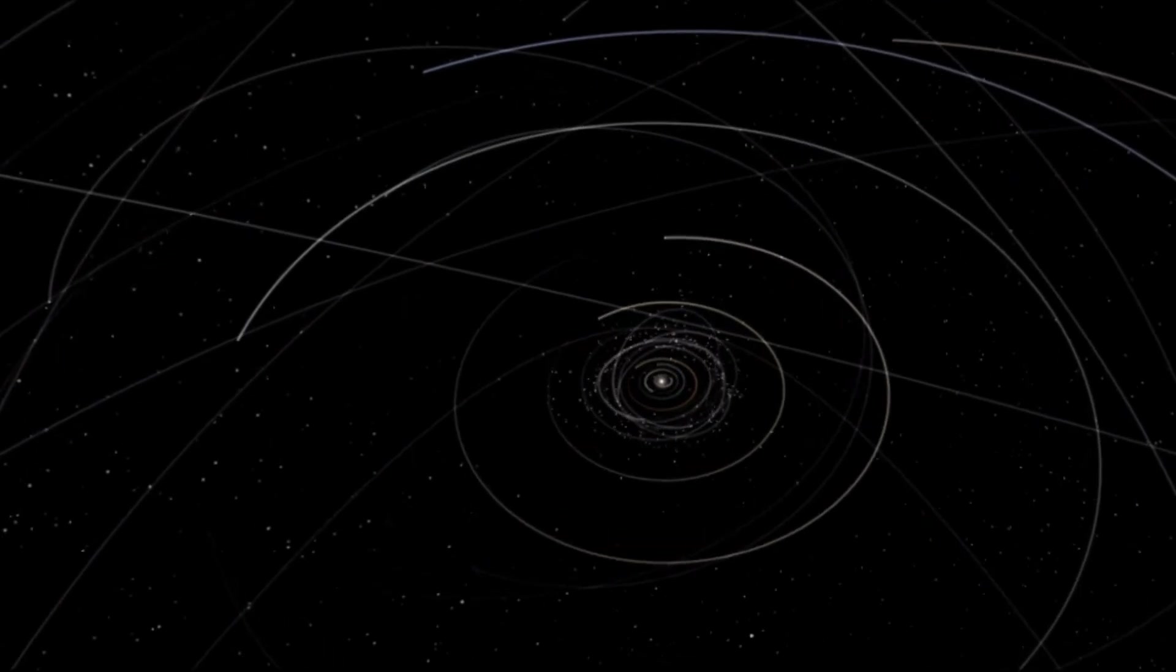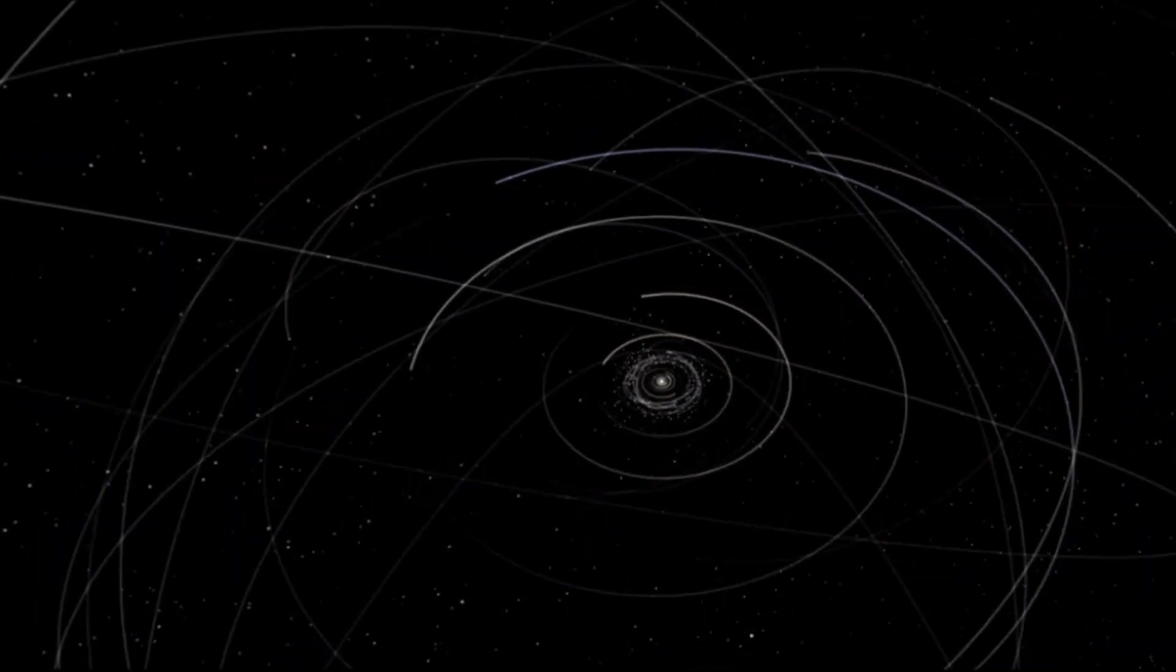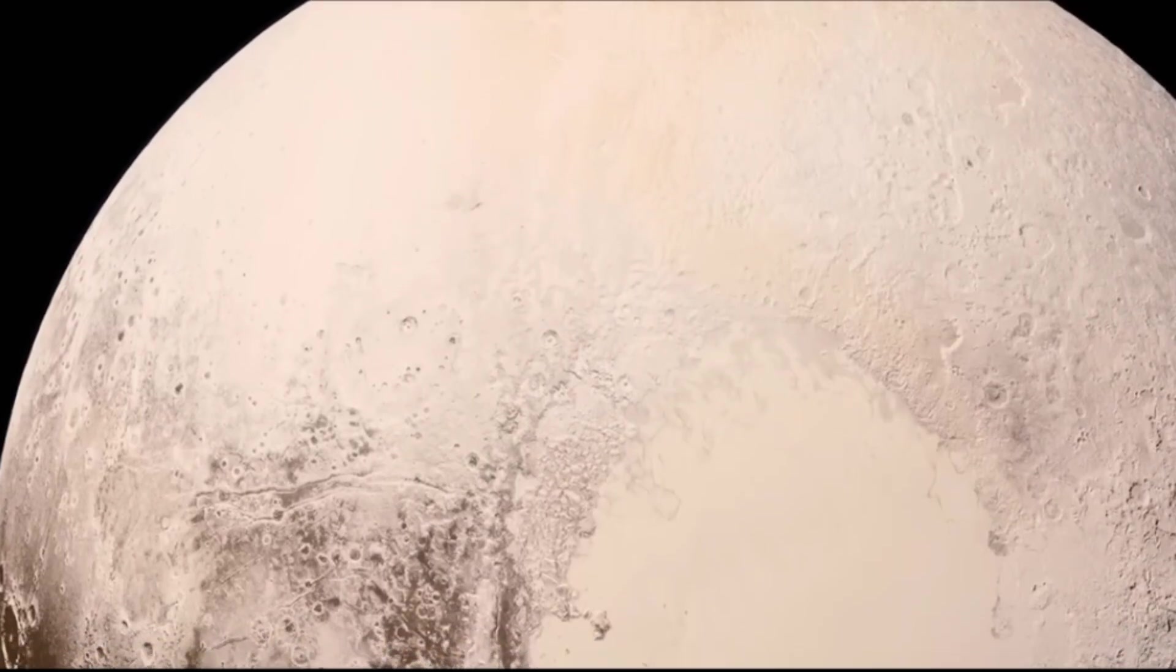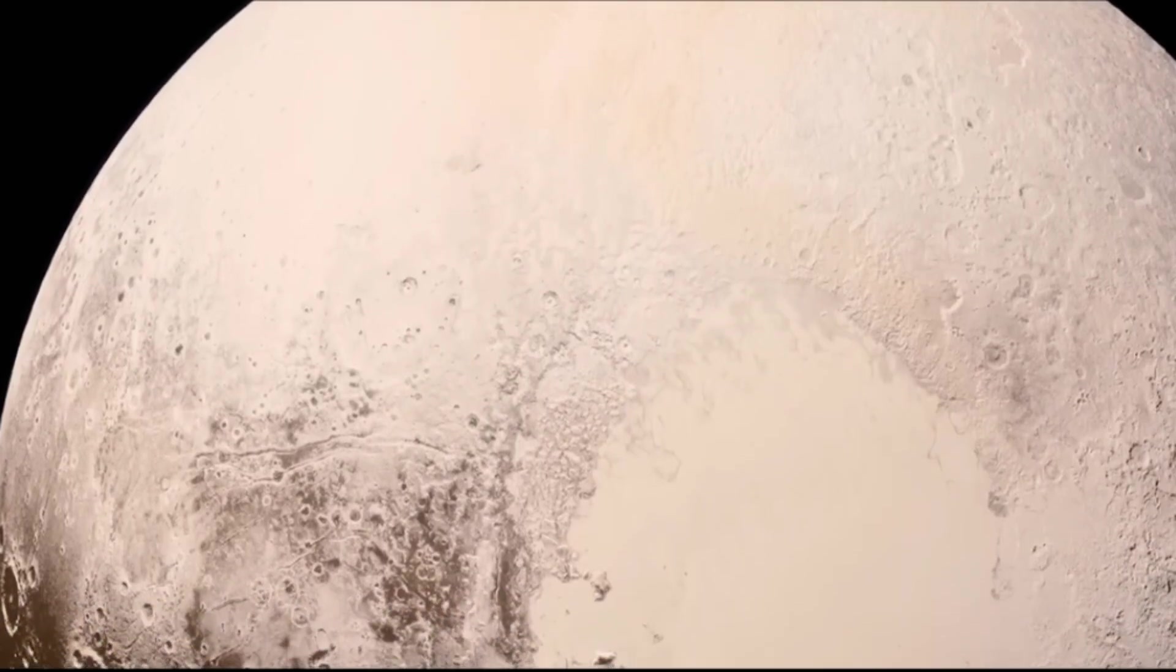Interestingly, the rotation of Pluto and Charon is synchronized in such a way that they always face each other with the same side, similar to how the moon always faces the Earth with one side. This means that Charon is always visible in the sky from one side of Pluto while it never appears from the other side.